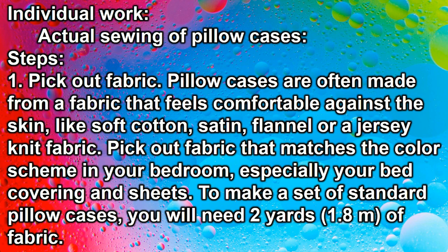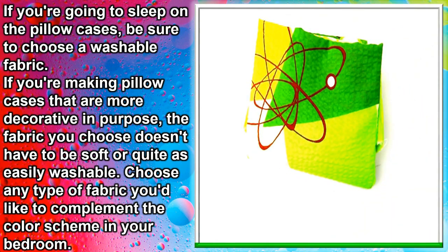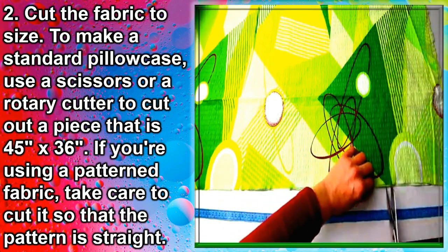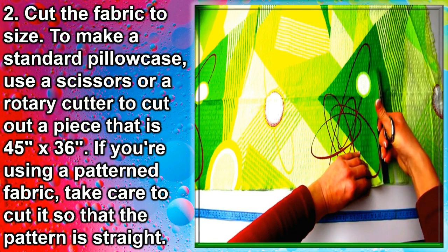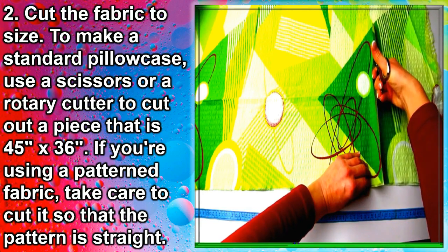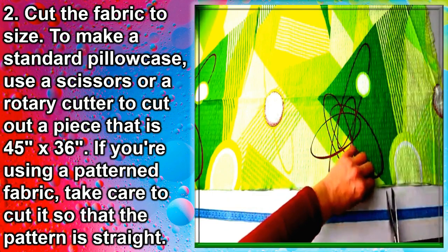Pick out fabric that matches the color scheme in your bedroom, especially your bed covering and sheets. To make a set of standard pillowcases, you will need two yards or 1.8 meters of fabric. If you're going to sleep on the pillowcase, choose a washable fabric. Step two: cut the fabric to size. Use a scissor or a rotary cutter to cut out a piece that is 45 inches by 36 inches.